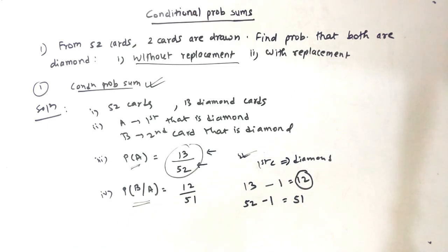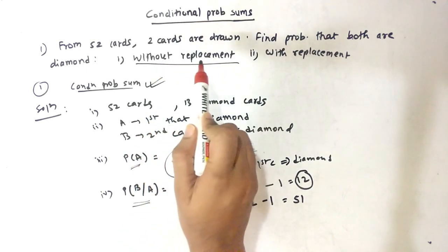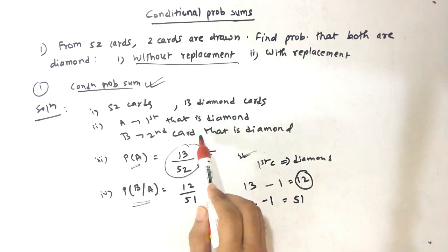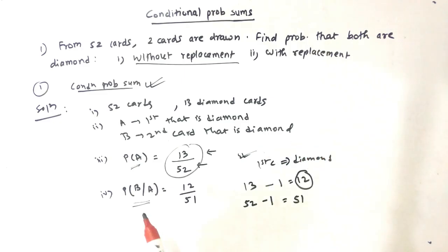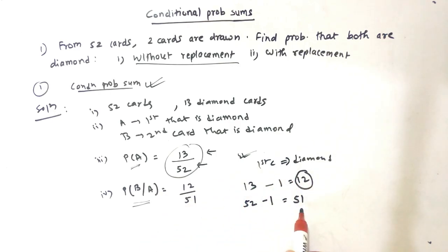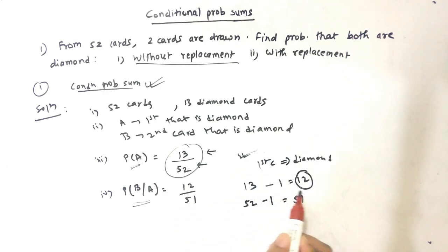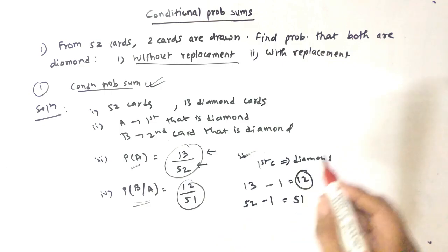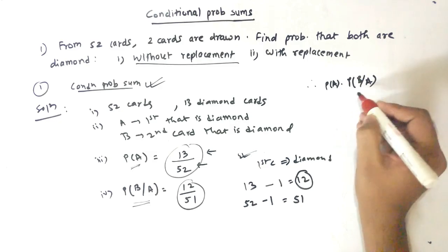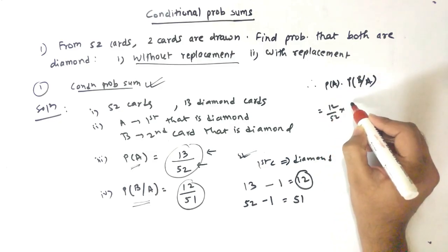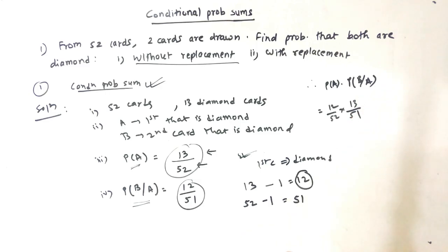So P(B|A) = 12/51. B given A means the second card that is diamond, given the first card is already drawn as diamond, leaving 51 cards and 12 diamonds. Therefore the answer is P(A) × P(B|A) = 13/52 × 12/51.